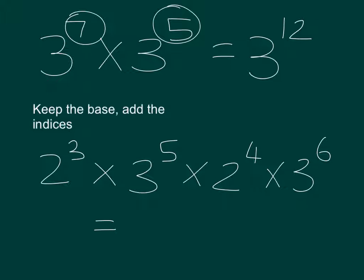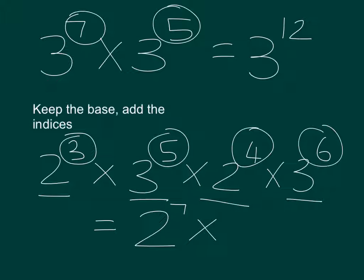So what bases are the same? Well we've got a 2 and we've got a 2, so we can add that 3 and that 4, so we keep the 2, we add 3 and 4, we get the power of 7. And then we've got a 3 and we've got a 3 and we've got a 5 and a 6, so that gives us 3 to the power of 11.